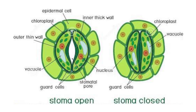Turgidity means swollen or stiffness. During the daytime, when water enters into the guard cells, they become turgid and the stoma opens. Note: stoma is singular, stomata is plural. When guard cells lose water, they become flaccid — flaccid means soft or shrunk. When water moves from the guard cells to adjacent neighbouring cells, the guard cell becomes flaccid and the stoma closes.